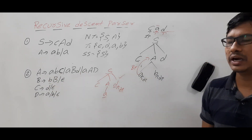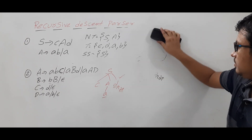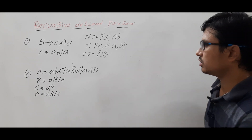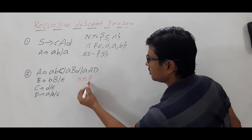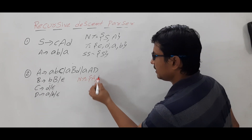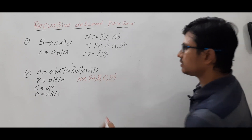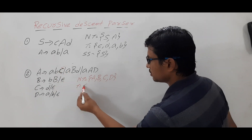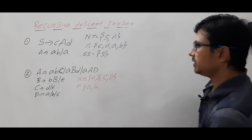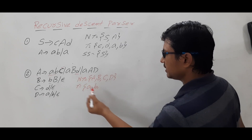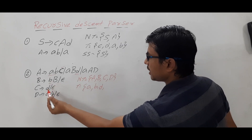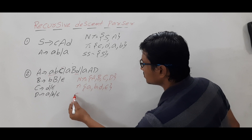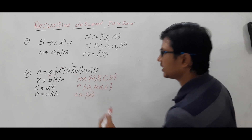Let me now discuss a more complex example to help you understand the concept better. First, identify the non-terminals: capital A, capital B, capital C, capital D. The terminals are: a, b, d, and epsilon. The start symbol is A. We want to generate the string 'aaba'.